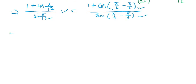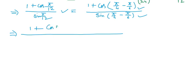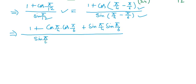Here we use the identity cos(a − b) = cosA·cosB + sinA·sinB. For the denominator we use the sin(a − b) identity, giving sin(π/4)·cos(π/6) − cos(π/4)·sin(π/6).